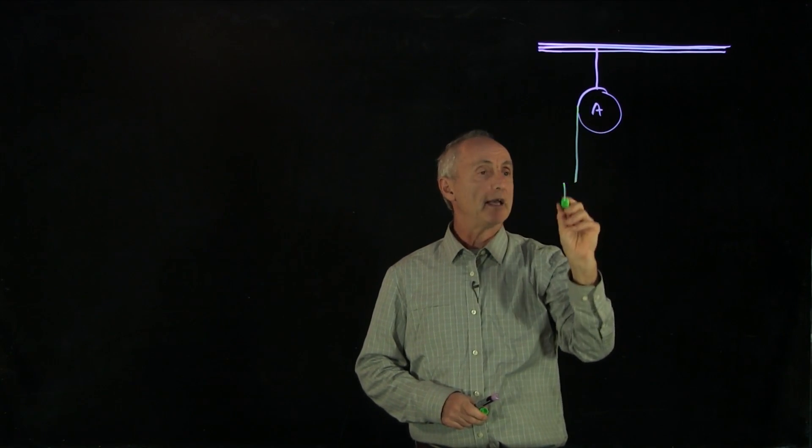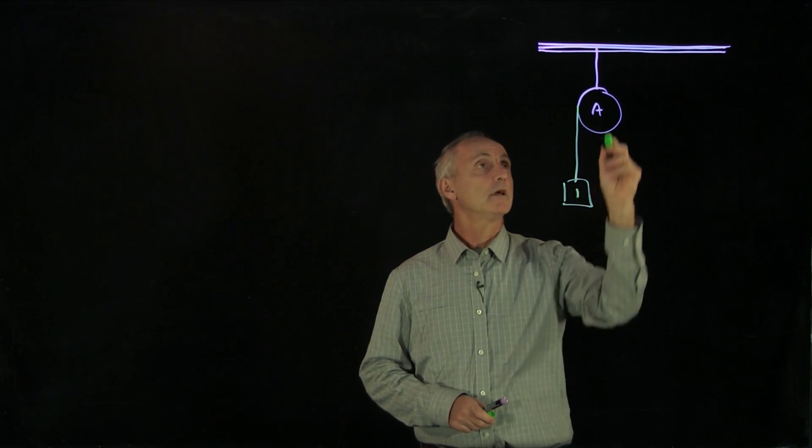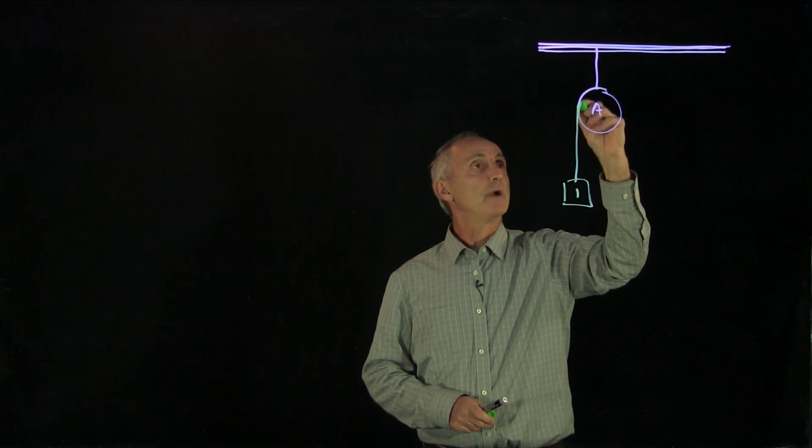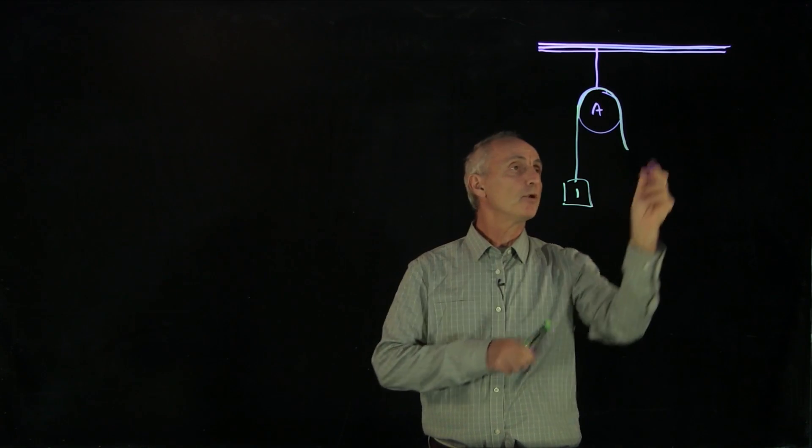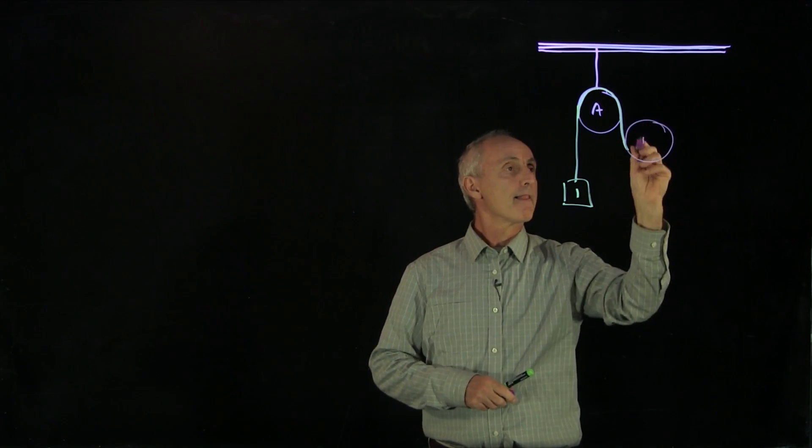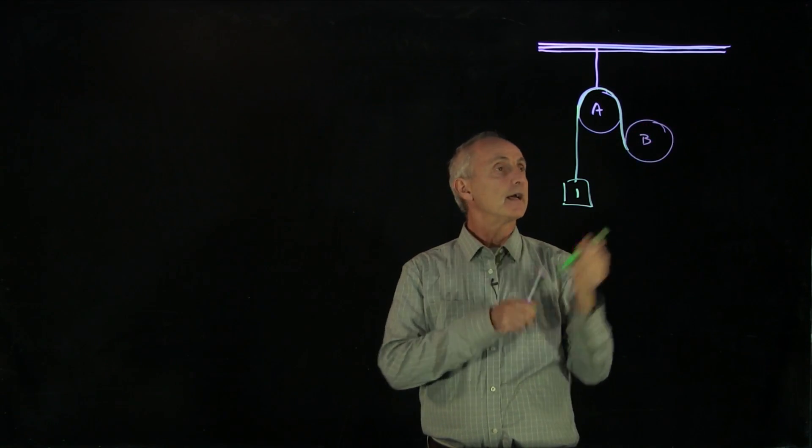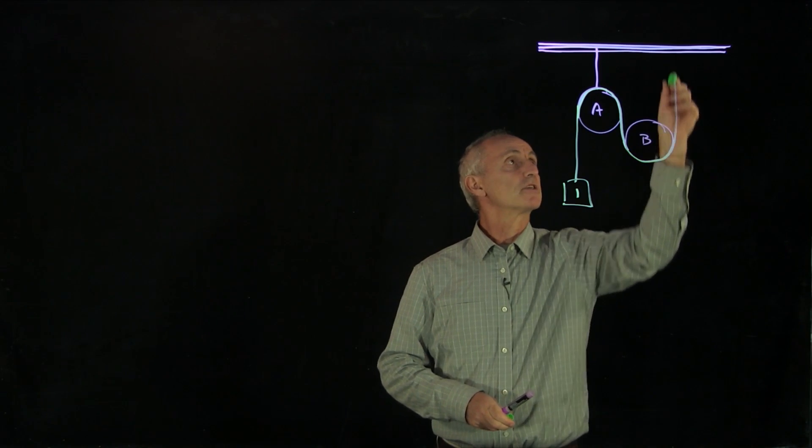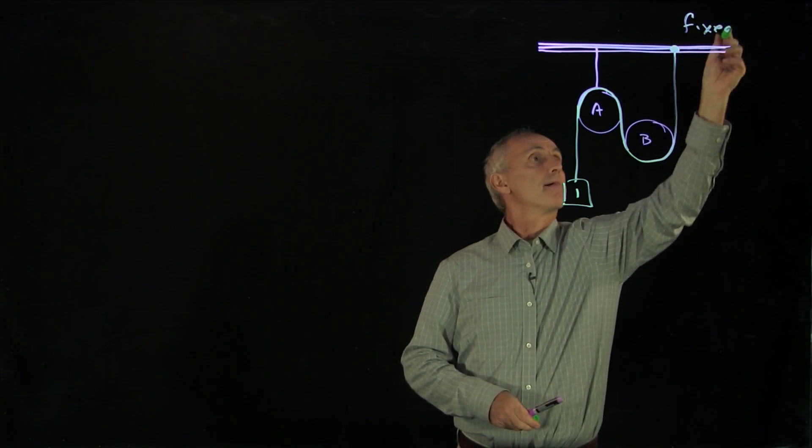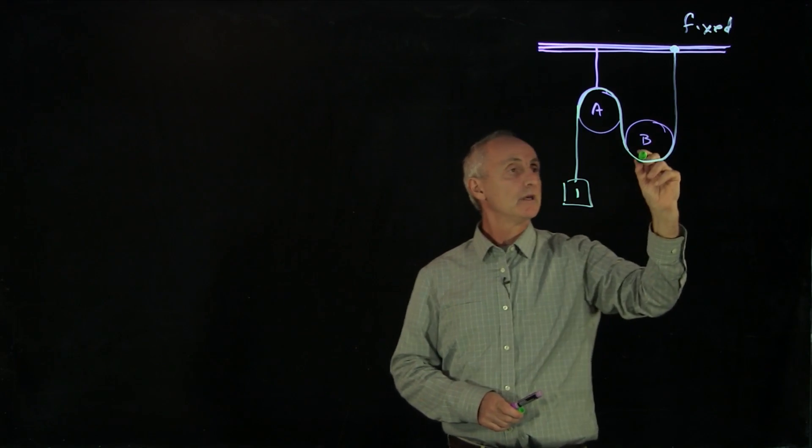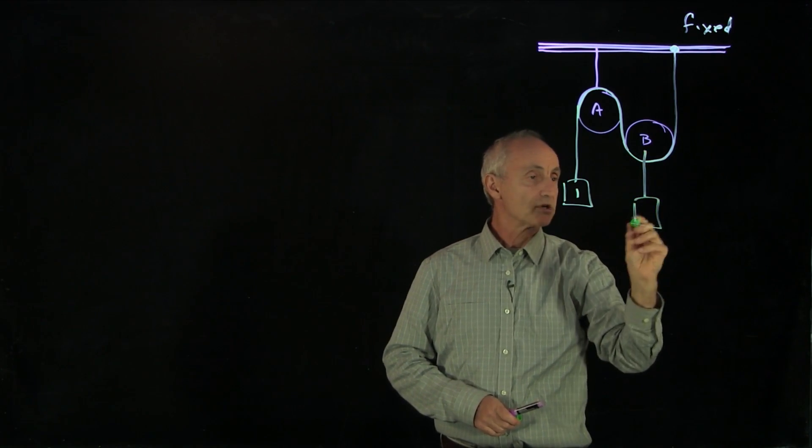This pulley will have a rope attached to it, wrapped around it. And here we have object 1. The rope goes around the pulley and now it's going to go around another pulley B and fixed to the ceiling. So that's fixed. And hanging from pulley B is another mass 2.